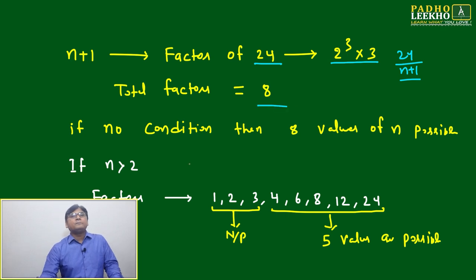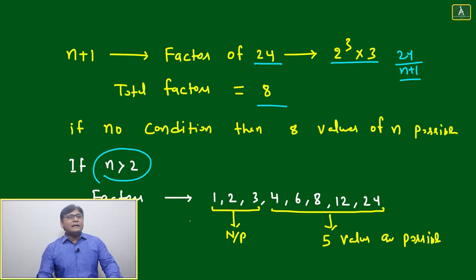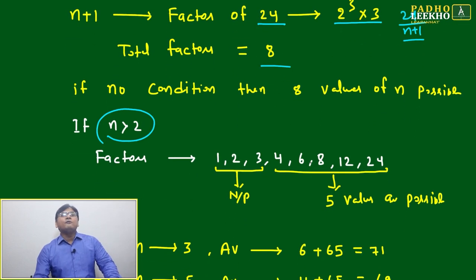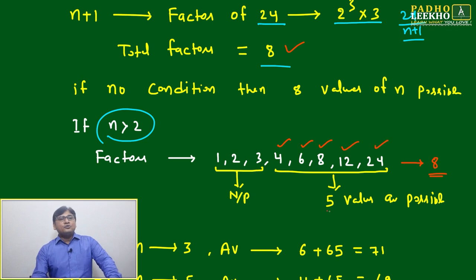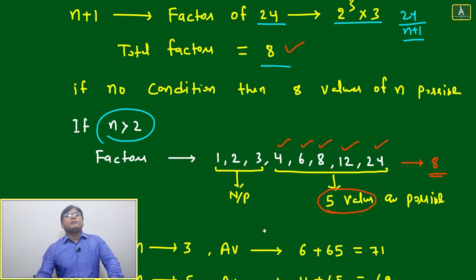24 prime factorized is 2³×3, giving total 8 factors. Out of 8, we have to discard a few because the condition is n>2. The factors are 1, 2, 3, 4, 6, 8, 12, and 24. Out of these 8 factors, 1, 2, and 3 are not possible because if n+1 equals 3, then n becomes 2, but n must be greater than 2. So minimum value starts at 4, 6, 8, 12, and 24. Total 5 different values of n will be possible.